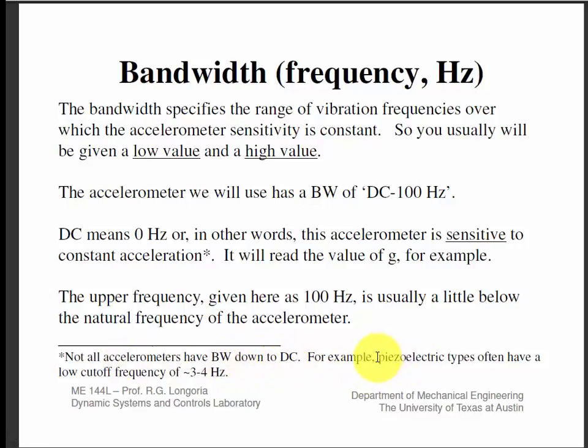Not all accelerometers have a bandwidth that goes down to DC. As I mentioned, piezoelectric types will not read DC. They roll off on the low frequency, so you can't read a constant value. If you turned the sensitive axis of a piezoelectric accelerometer to be sensitive to Earth's gravitational field, it would basically read zero because it can't read a constant. But if you start shaking it at a certain frequency above four or five hertz, it'll read that.